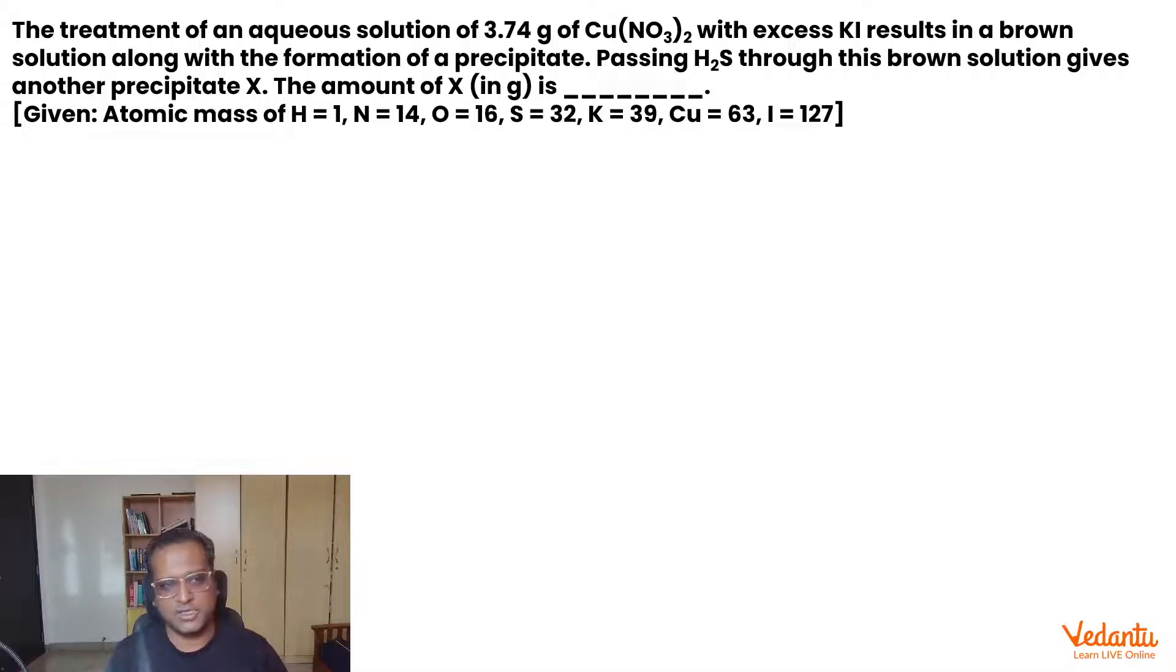Let's see what the question is all about. The question says some amount of cupric nitrate is reacted with excess KI and a brown solution forms along with a precipitate. Yes, we know what the reaction he is talking about. He is talking about Cu(NO₃)₂ reaction with KI to give what?